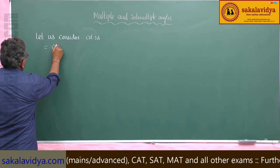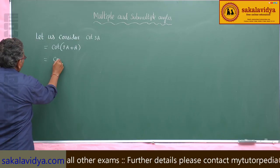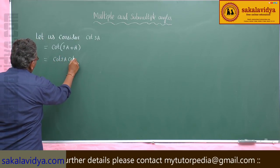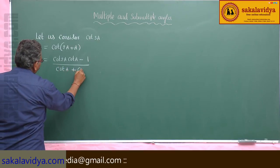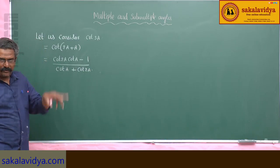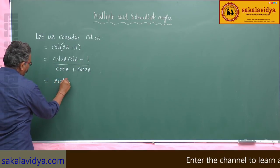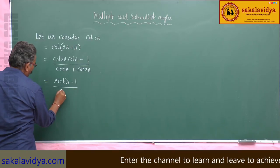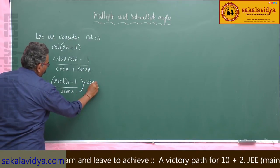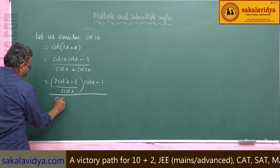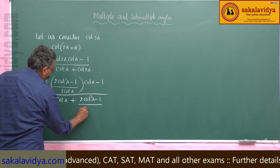Cot(3a) can be written as cot(2a + a), using the cot(a + b) formula: [cot(2a)·cot(a) - 1] / [cot(a) + cot(2a)]. Let us now substitute the value of cot(2a), which is (2cot²a - 1) / (2cot a), into the formula.